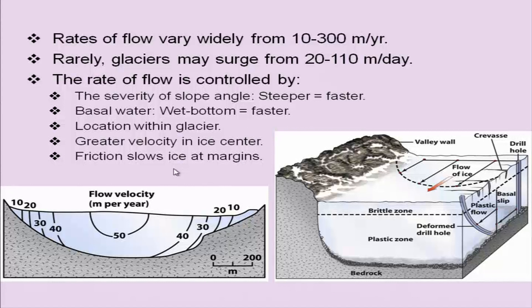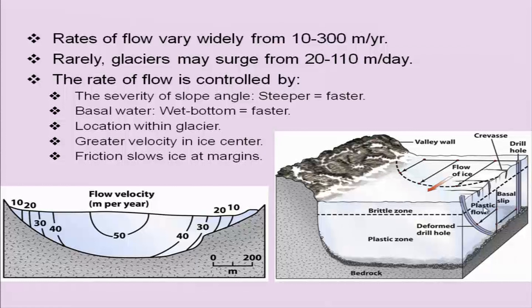The upper 60 meters is the brittle zone where crevices and tensional cracks form along with movement, but below this is the plastic zone. Movement depends on whether the basal portion is wet or dry — resulting in either basal slip or plastic flow.